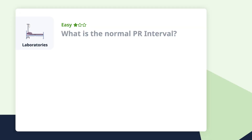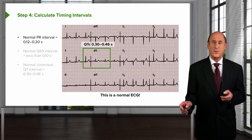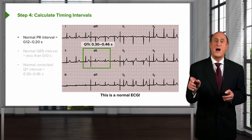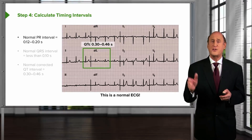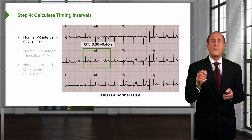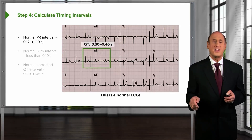Round two: laboratories. Let's kick things off with an easy one. What is the normal PR interval? There are five little boxes within the bigger box. The normal PR interval, from the beginning of the P wave to the beginning of the QRS, is somewhere between three and five little boxes — 0.12 to 0.20 seconds.